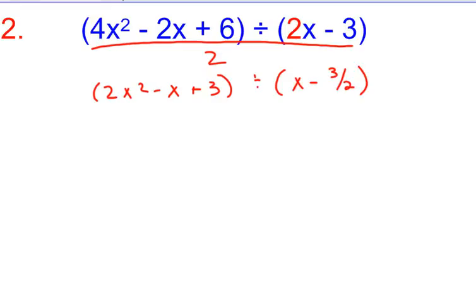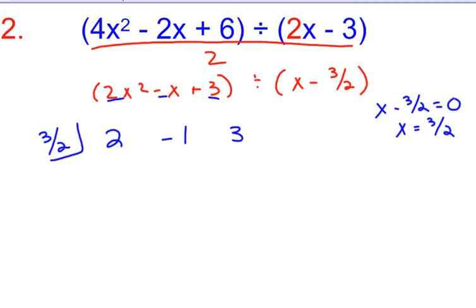So as I go to do my problem, I'm going to come over here and say, I need to figure out what am I solving for x. So x is 3/2. So that's what I put right here in my little box. And then I take each coefficient, remember. So 2, -1, and then my constant of 3. And I'm going to go here and set up my synthetic.